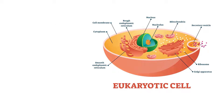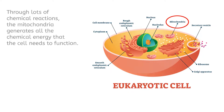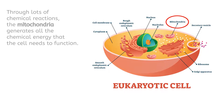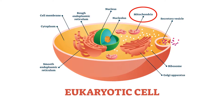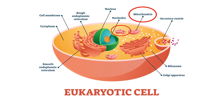Another super-important membrane-bound organelle in eukaryotic cells is the mitochondria. Through lots of chemical reactions, this organelle generates all the chemical energy that the cell needs to function. Most eukaryotic cells contain lots of mitochondria, because cells need lots of energy to function.